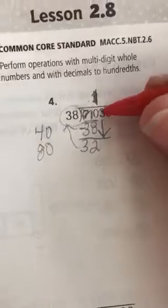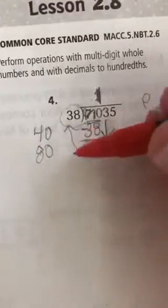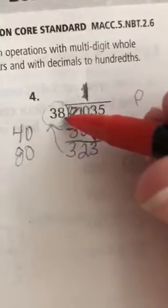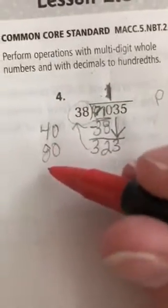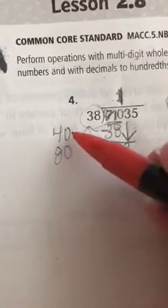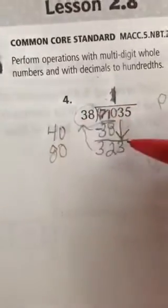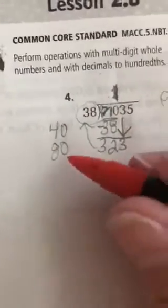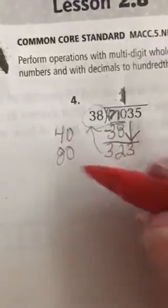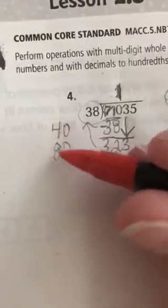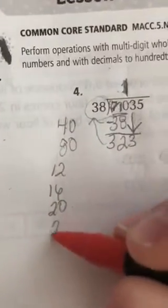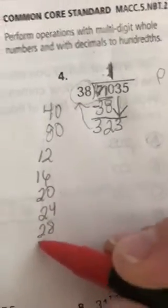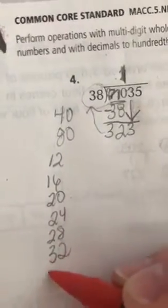So now I'm moving on to my tens place. I'm going to drop down that 3. Now I have 323, and I want to figure out about how many times can 38 go into it. Again, I don't know my 38s, but I do know my 40s to help me estimate. So about how many times can about 40 go into about 320? So if I know my multiples for 4, then I know 40. So let's see. 4, 8, 12, 16, 20, 24, 28, 32, 36.